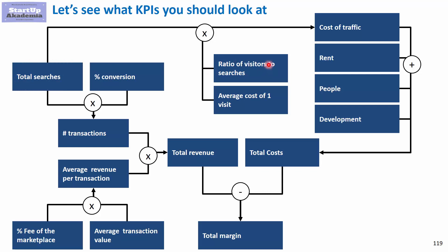The cost of traffic depends on how many searches you want to generate, but also on what the conversion rate of visitors to searches is — not every visitor will search for a doctor. To reach the total number of searches you need, you must account for the visitor-to-search ratio, and then multiply by the average cost of one visit. This gives you the full picture of revenues and costs and what drives them.